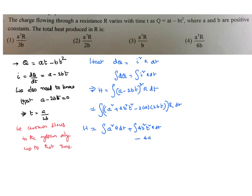We can write the constants outside. That can be written as a squared r t plus 4b squared times integral of t squared, which is t cubed by 3, minus 4ab r times integral of t, which is t squared by 2.